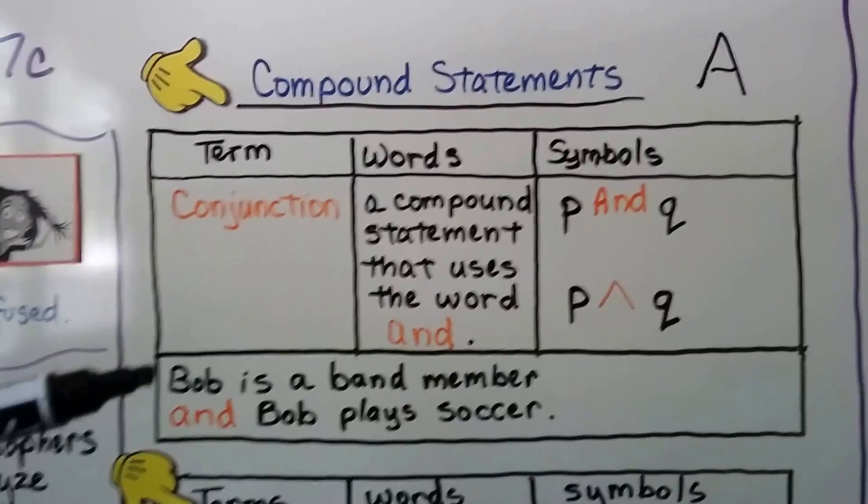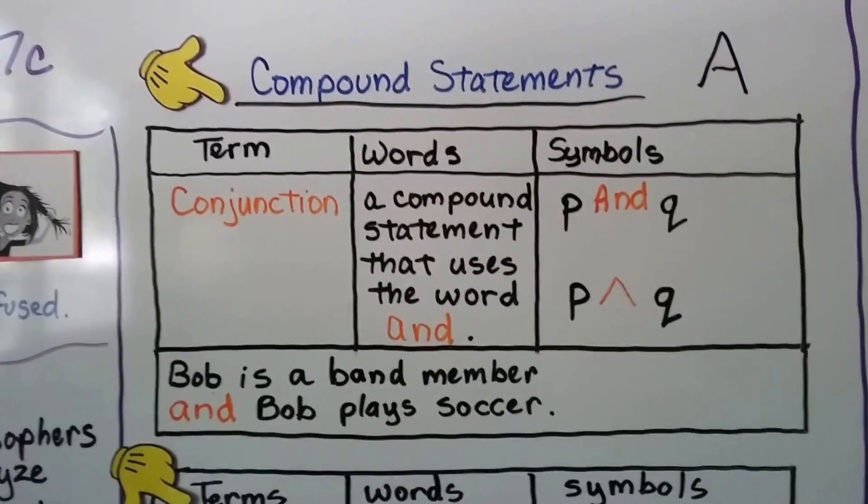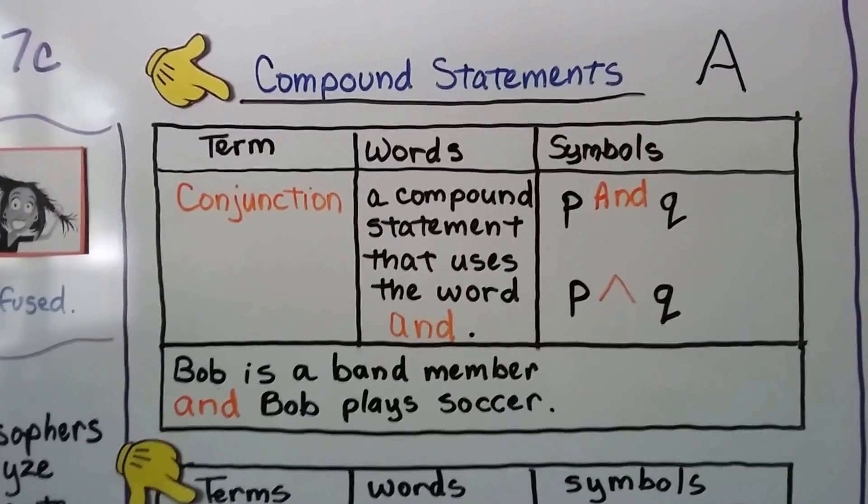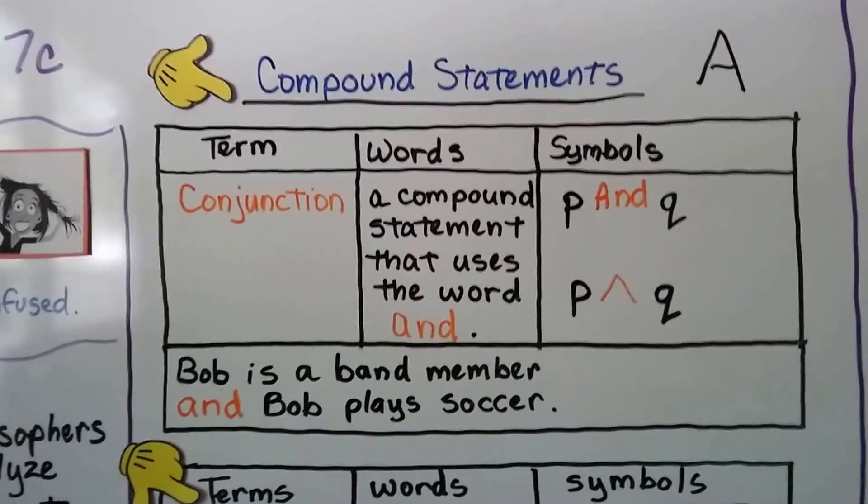An example would be Bob is a band member and Bob plays soccer. So either both are true or both are false. Both would have to be true for this conjunction to be true.